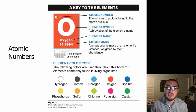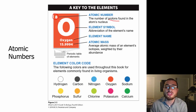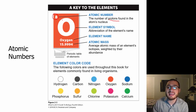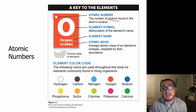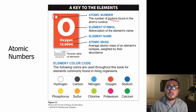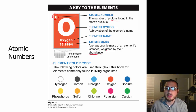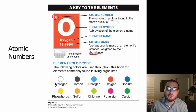Each element also has an atomic number, which indicates the number of protons found in the nucleus. We organize elements by atomic number, and it tells us how many protons are in the nucleus. Each element has a different number of protons, and that's how we tell what type of element or atom it is. You also have the element name and the atomic mass. Atomic mass is weighted by abundance. In this book, different atoms are color-coded — hydrogen is white, carbon is gray, and so on.